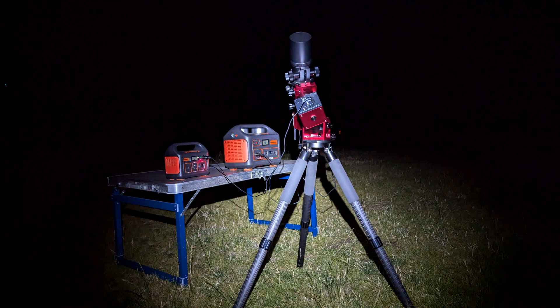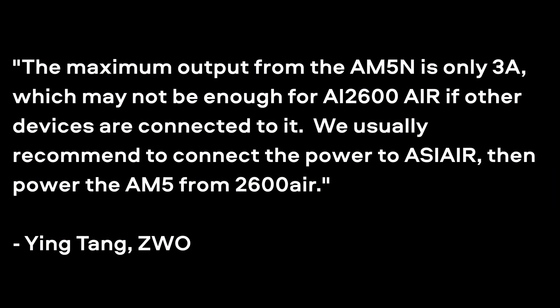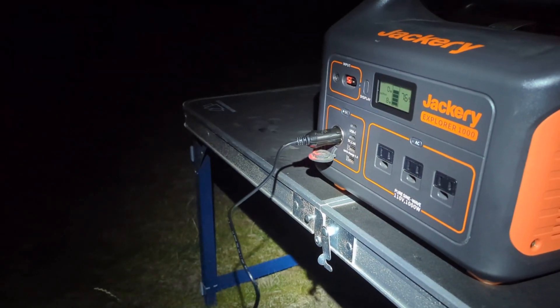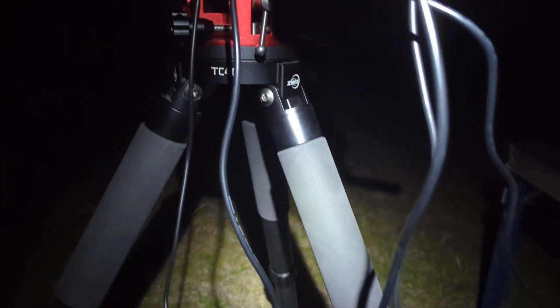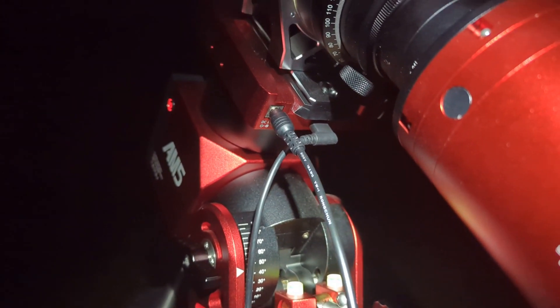My current setup is a Jackery battery with a 12-volt cable powering the 2600 Air, and a second battery next to it with another 12-volt cable that powers the AM5N. It's not a perfect solution since it requires two batteries, but all the problems have been fixed and I haven't had a single issue since. I also heard back from ZWO this morning — they actually recommend powering the AM5N through the 2600 Air: run a 12-volt cable from your battery to the 2600 Air, then take a power cable from the 2600 Air into the AM5N, and that should be enough to get everything up and running.